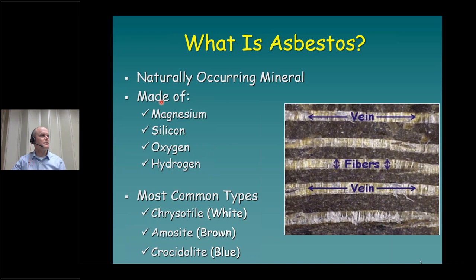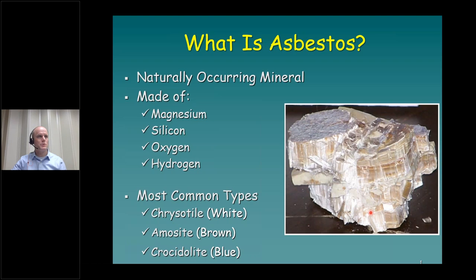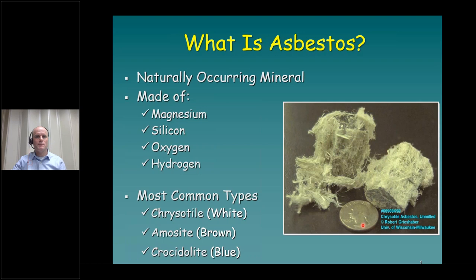Asbestos is made of magnesium, silicon, oxygen, and hydrogen. The most common types you may encounter are chrysotile, which is a white asbestos; amosite, which is a brown asbestos; and crocidolite, which is a blue asbestos. Zooming out on that image, this is what an asbestos mineral looks like — you can see the veins in there. Here is an image of chrysotile asbestos: very fibrous, dangerous material.